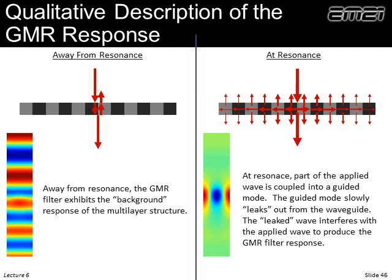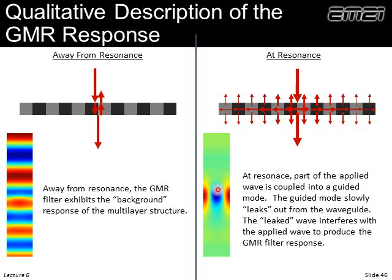Away from resonance, a wave comes in, gets diffracted but does not match a guided mode. This just acts like a slab of material — the field going through looks essentially like a plane wave, maybe a little bump inside the device, but for the most part it just passes through like a plain dielectric slab. On resonance, however, the incoming wave gets diffracted into a guided mode, which travels along the waveguide. Like a grating coupler, it sees the grating and slowly leaks, and this leaked wave combines out of phase with the applied wave, giving us an overall filtering response. On resonance the field shows a very strong resonant mode within the guide, though in the background the wave-like pattern is still present — the color scaling just makes it hard to see.